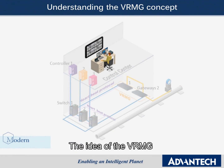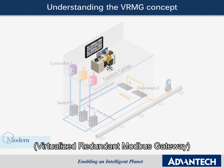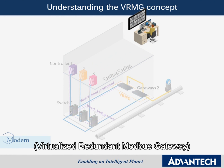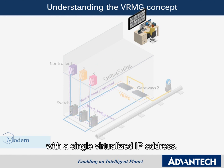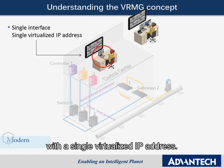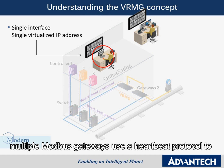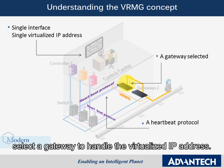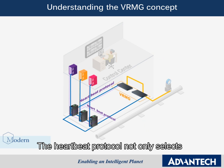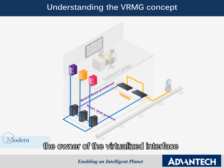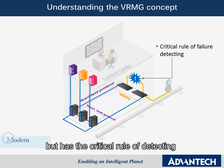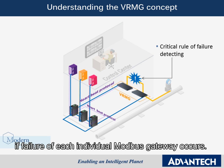The idea of the VRMG — virtualized redundant MOBA's gateway — is to create a virtualized MOBA's gateway with a single virtualized IP address. In the background, multiple MOBA's gateways use a heartbeat protocol to select a gateway to handle the virtualized IP address. The heartbeat protocol not only selects the owner of the virtualized interface but has the critical role of detecting if failure of each individual MOBA's gateway occurs.